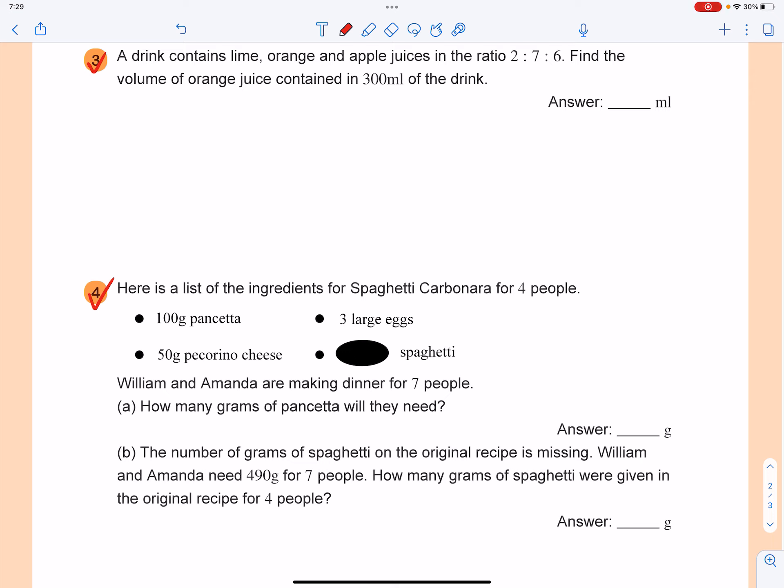So we'll see that in total you have 300ml of the drink and how many parts are there? Let's see, it will be 2 plus 7 plus 6, you got 15, right?